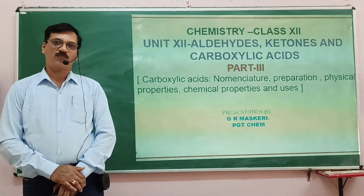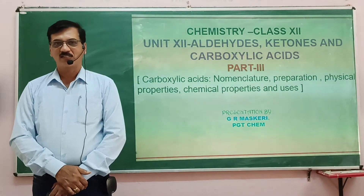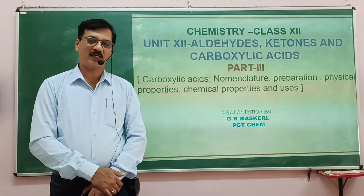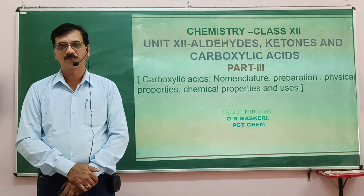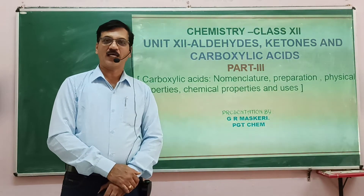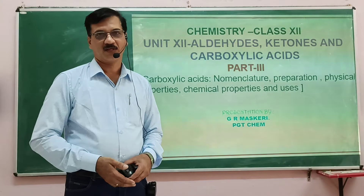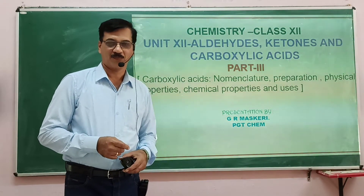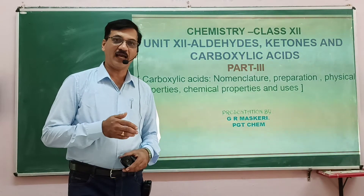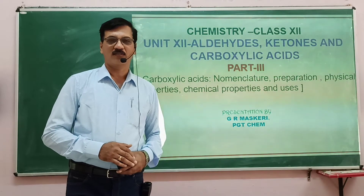Carboxylic acids — probably all of you had a bite from a red ant when you were young. That red ant bite is very irritating, and the reason for this is the formic acid that it injects. We come across carboxylic acids in our day-to-day life. You might have enjoyed gobi manchurian with its spicy and sour taste. The ingredient responsible for the sour taste is vinegar, which contains acetic acid. All these edible acids contained in most fruits are carboxylic acids.